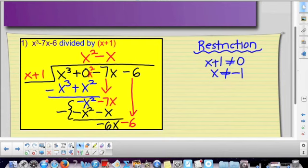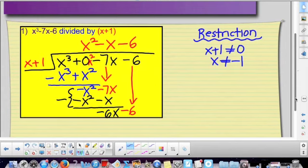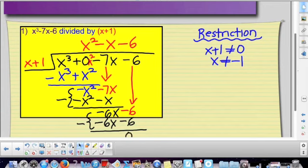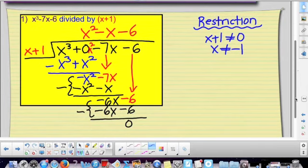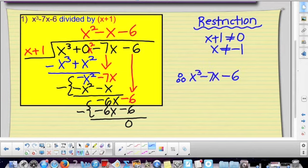Bring down the negative six. So if I write a negative six up in my quotient, negative six times x plus one is negative six x. Negative six times positive one is negative six. When I subtract those two terms, I'm going to get zero. Therefore, my final answer, x cubed minus seven x minus six is going to be equal to x plus one times x squared minus x minus six. So I've broken down my x cubed.